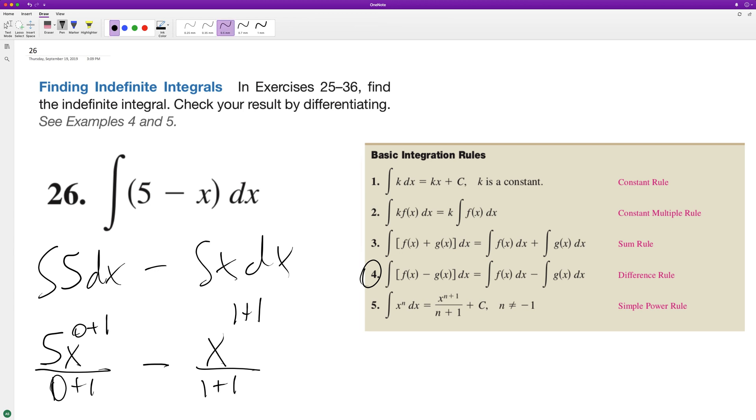If you just look at how this works down here for each individual portion, and then plus C for integral. And so we're going to end up here with 5x, excuse me, minus x squared over 2 plus C.